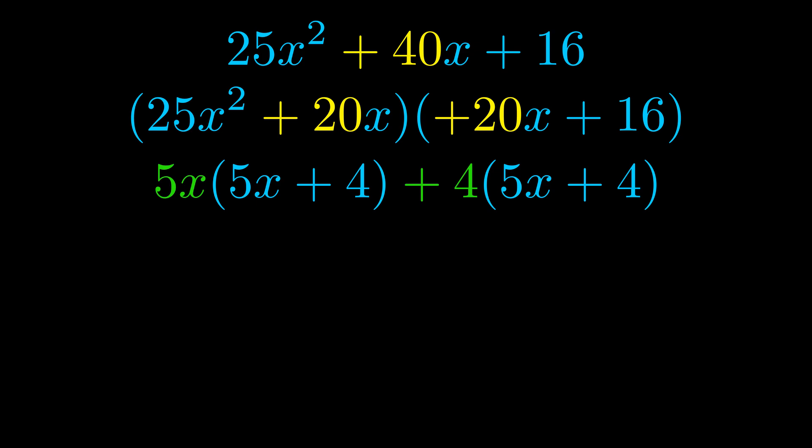Notice also how what remains inside of the parentheses is the same in both cases. The blue values are the same. Those blue values will become one of our factors and we will combine the two green values, the GCFs that we pulled out, to get the other one. And that is our fully factored equation.